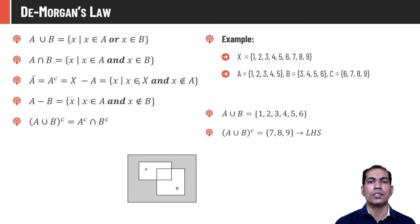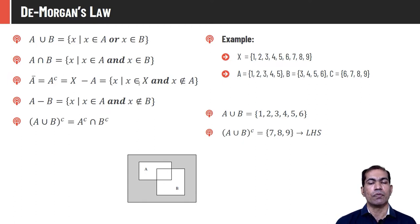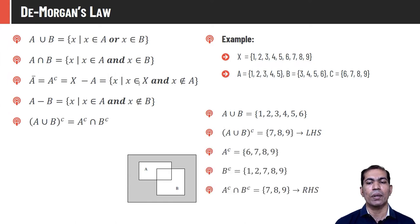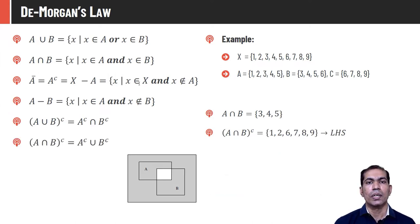De Morgan's Law is a very important characteristic for operations on crisp sets — useful to reduce or simplify many set computations. It is defined as: (A ∪ B)' = A' ∩ B'. To prove this, A ∪ B = {1 to 6}, complement of that is {7, 8, 9}. Now computing the right-hand side: A' = {6,7,8,9}, B' = {1,2,7,8,9}. Their intersection is {7, 8, 9}, which equals the left-hand side. De Morgan's Law is proved.